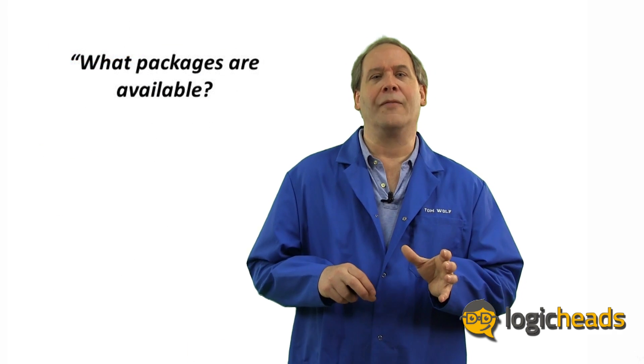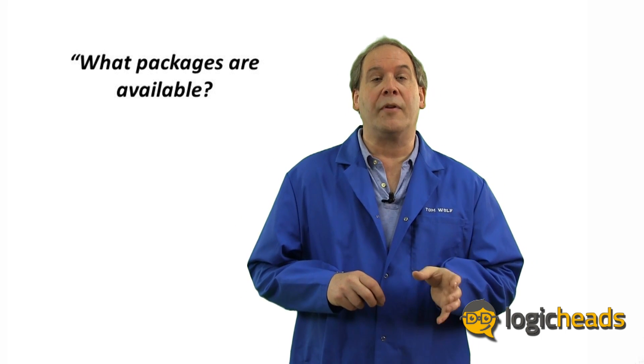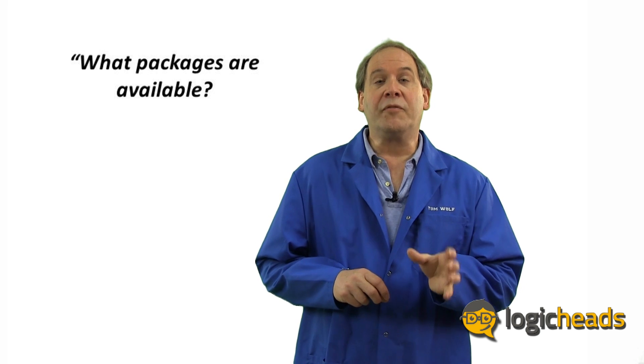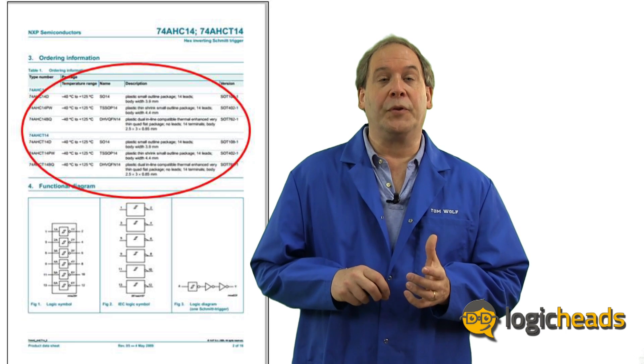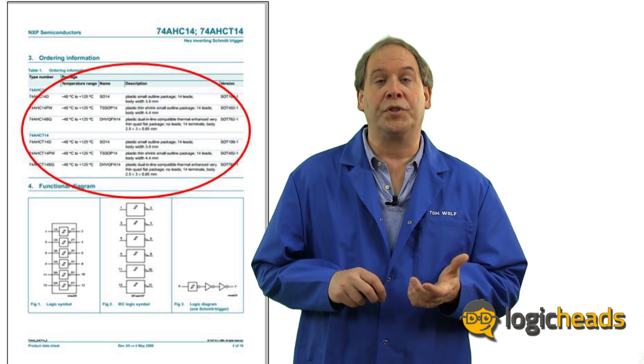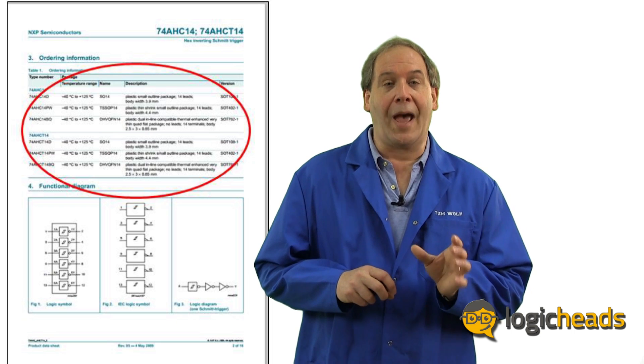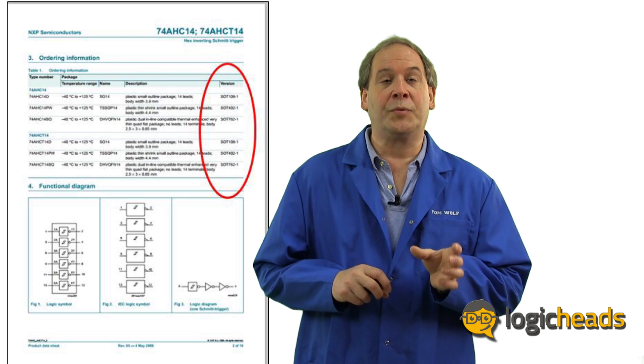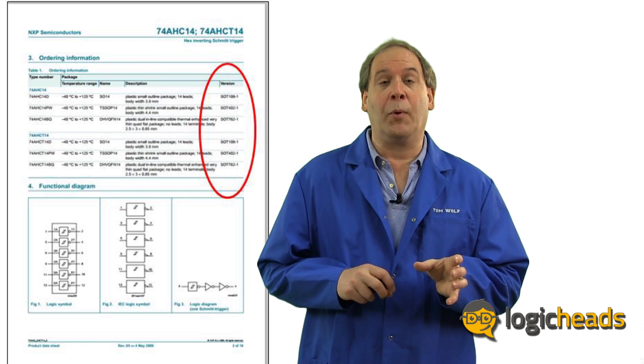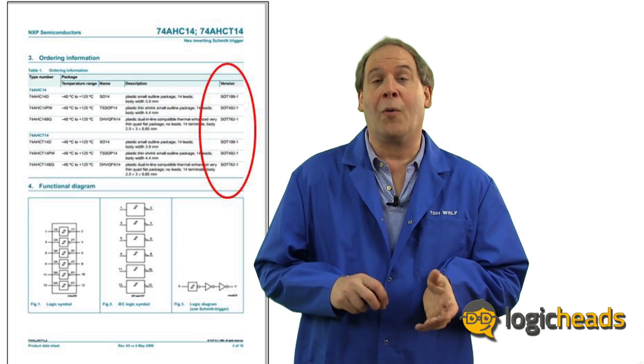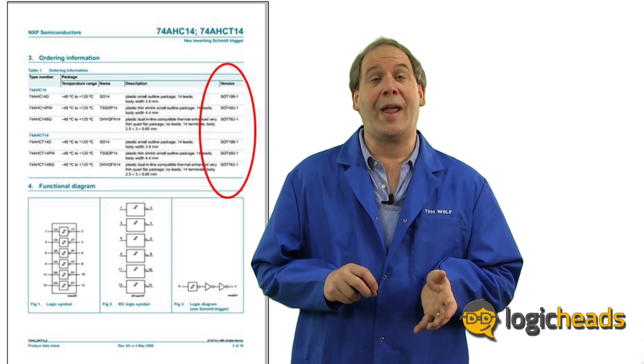What packages are available for this device? Most logic devices come in two, three, or even more package types. This information can be found on page two under ordering information. The actual physical dimensions for each of these packages are shown further down in the datasheet. Now, the other useful information here is the actual SOT number. This is the industry standard package definition. This makes it easier when you're laying out a board because most schematic capture programs already know the dimensions for these common parts. So you don't need to go out and create a package from scratch.